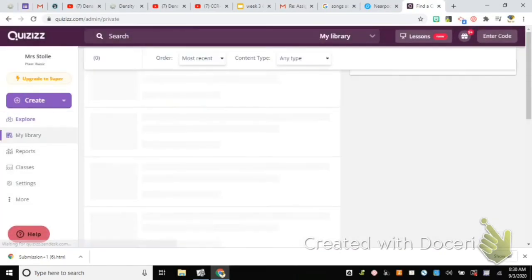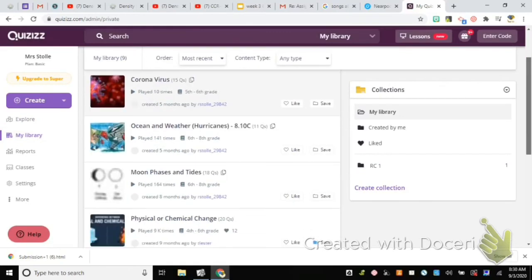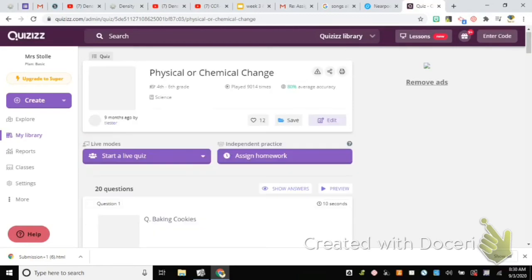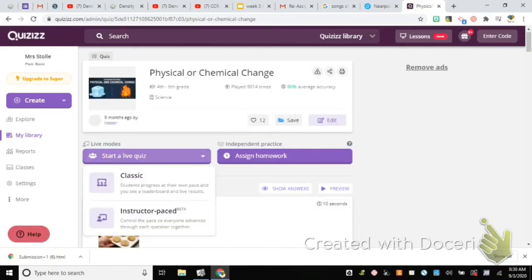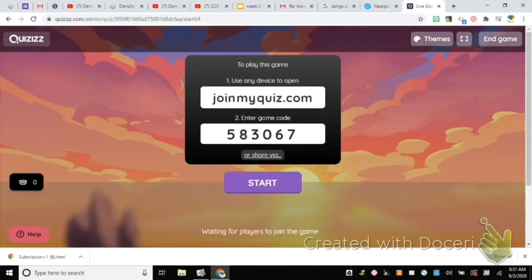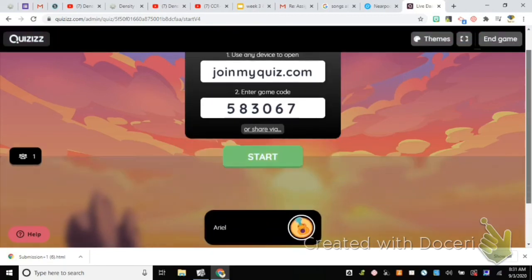Everyone here in class with me, I'm going to give you a code to join a live quizzes with me. So you're going to go to joinmyquiz.com, and you're going to enter this game code, 583067. Online learners, this code is only good for live instruction, so you're going to have to click the link in Schoology to access this yourselves.